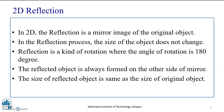In this video lecture, we will be focusing on two-dimensional reflection. What is a two-dimensional reflection? The two-dimensional reflection is a mirror image of the original object. In the reflection process, the size of the object does not change. Reflection is a kind of rotation where the angle of rotation is 180 degrees. The reflected object is always formed on the other side of the mirror, and its size is the same as the original object.